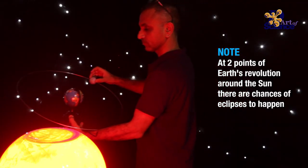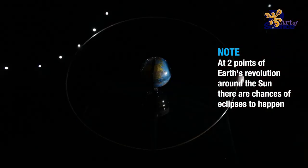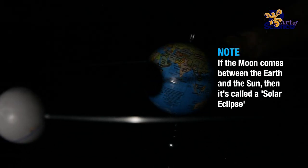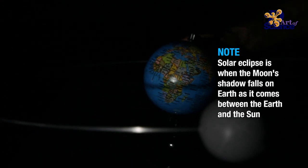And at two points of the earth's revolution around the sun there are chances that eclipses can happen. If the moon comes between the earth and the sun then there's a solar eclipse because people who are in line with the shadow will not be able to see the sun.